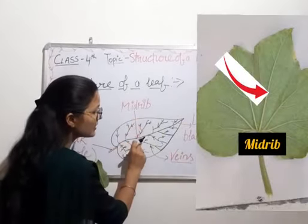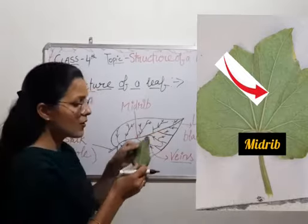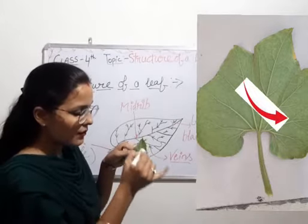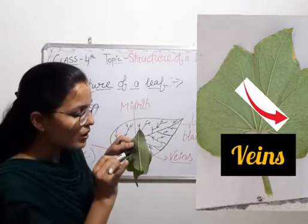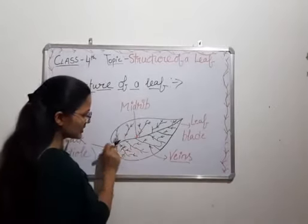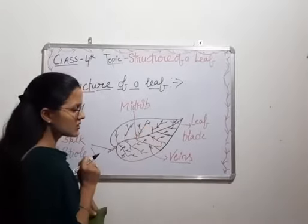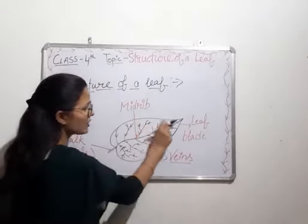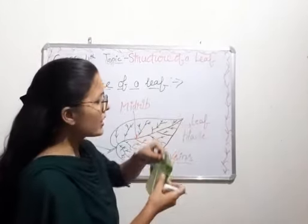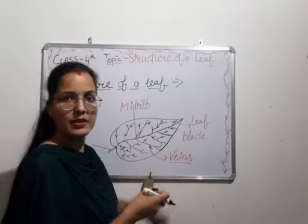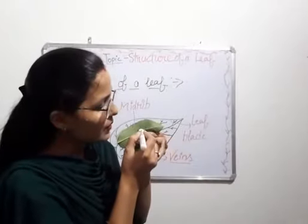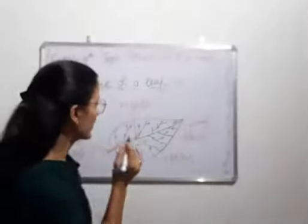This is the midrib. The leaf is covered with small thick tubes called veins. These are the veins in the leaf structure. The broad and flat outer surface of a leaf is called the leaf blade.